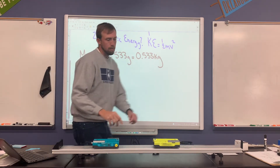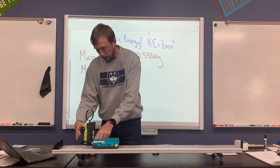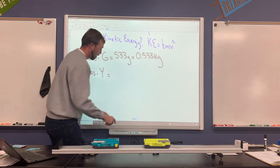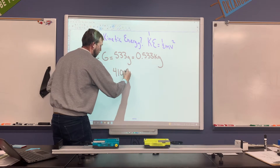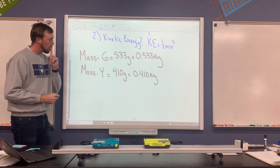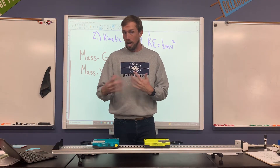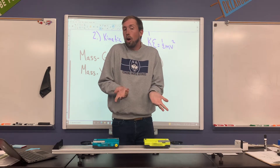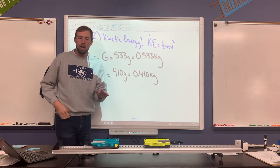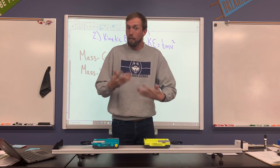Now for the yellow cart, I'll do the same — take it off the track and onto the scale. We're looking at 410 grams, so 0.410 kilograms. So I've got my masses. Now I need to set up a collision, and for that I need at least one of the carts moving. We're really not that concerned with position here — we're mostly concerned with velocity before and after the collision.